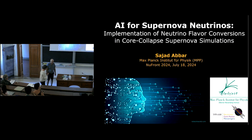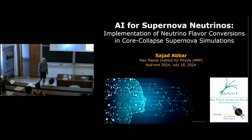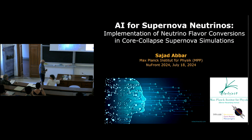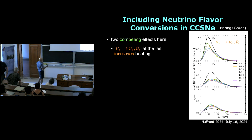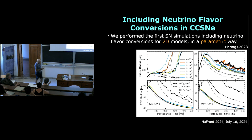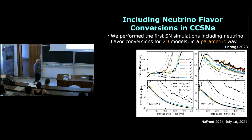Thanks a lot for this opportunity and for this very nice workshop. I'm Sajjada Bar, and today I will be telling you about AI for supernova neutrinos, and more specifically AI for the implementations of neutrino flavor conversions in core-collapse supernova simulations. Let me start with this motivation — this is the plot that you have already seen, and I would like to first elaborate on it before explaining how AI can help.